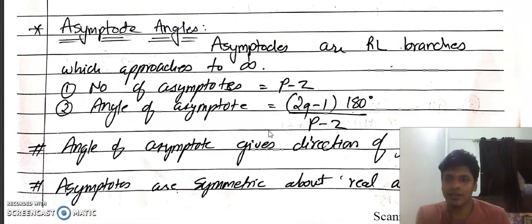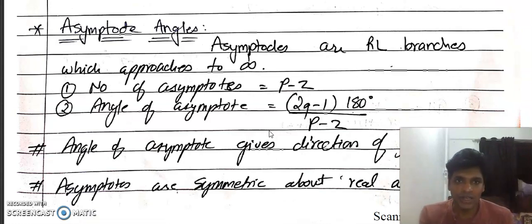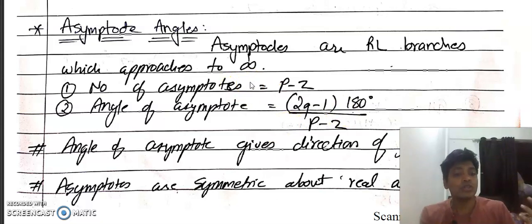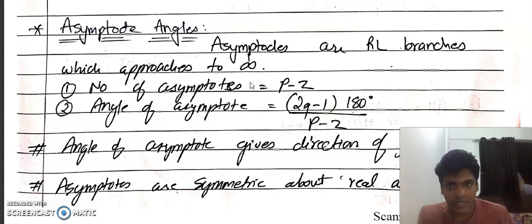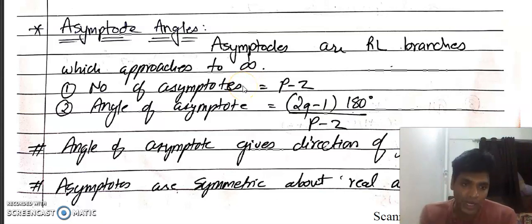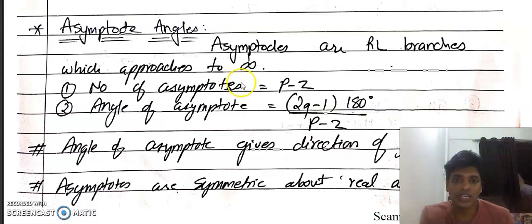The next point is asymptote angles. Asymptotes are the root locus branches which approach infinity. The number of asymptotes is equal to P minus Z — that is, the number of poles minus the number of zeros.